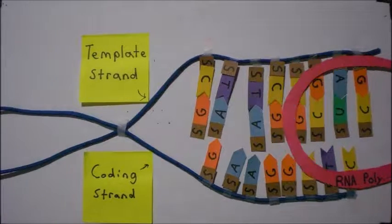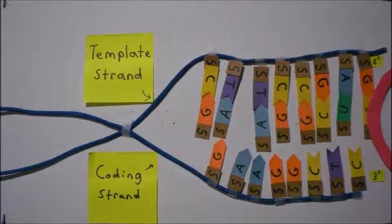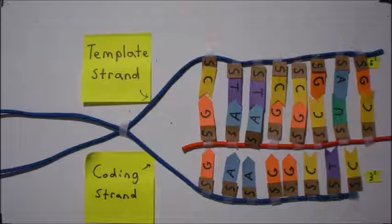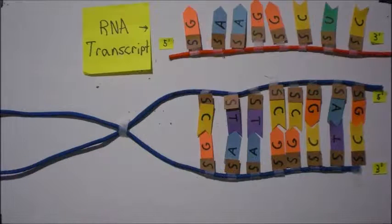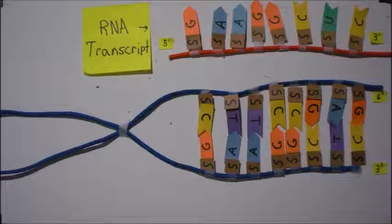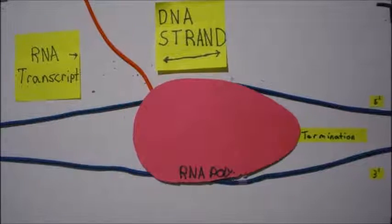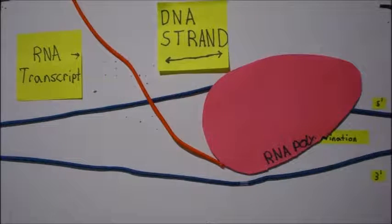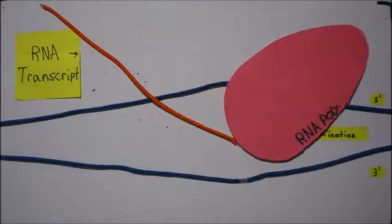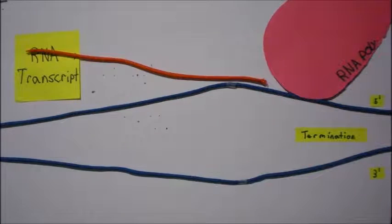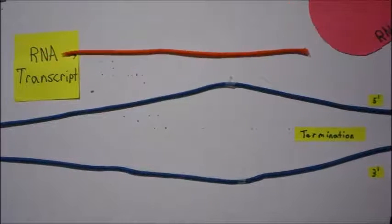As RNA polymerase moves forward, mRNA is transcribed and DNA is continuously re-annealed. As elongation continues to occur, RNA polymerase eventually reaches a termination sequence at which point mRNA and RNA polymerase is released from the DNA.